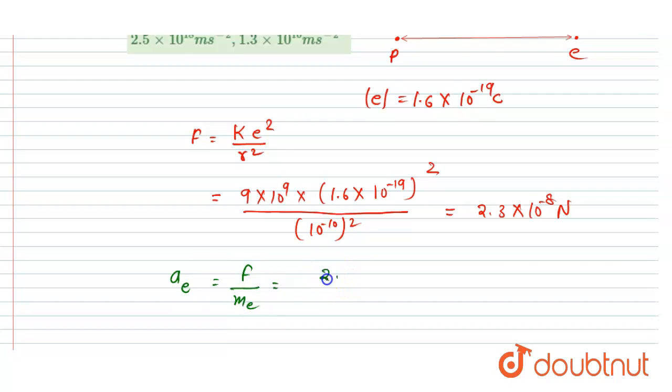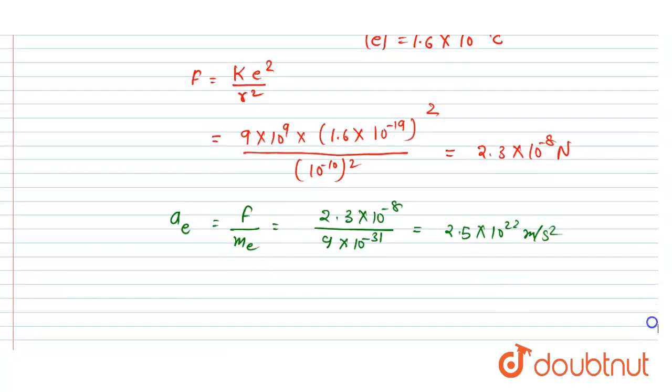So just you need to divide the mass of electron from this force. So I will divide the mass of electron. Since we know that the mass of electron is 9 × 10^-31, so after division you will get 2.5 × 10^22 meter per second square as the acceleration of the electron.